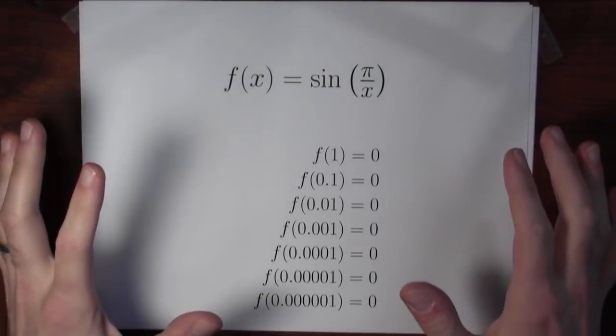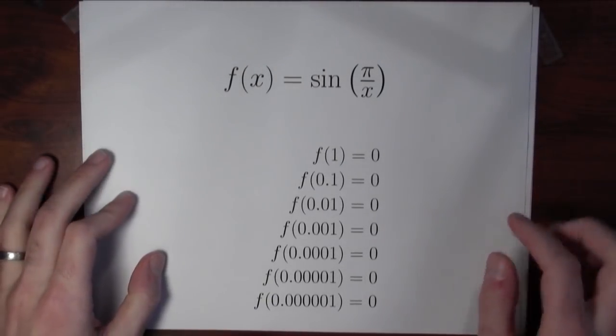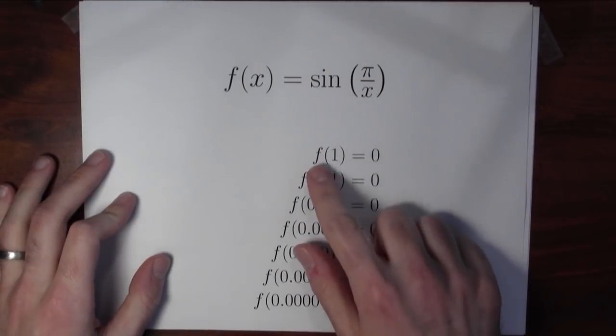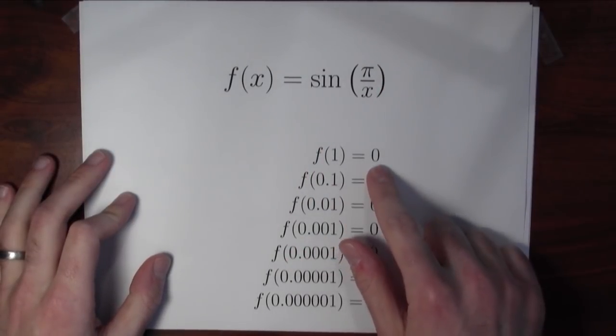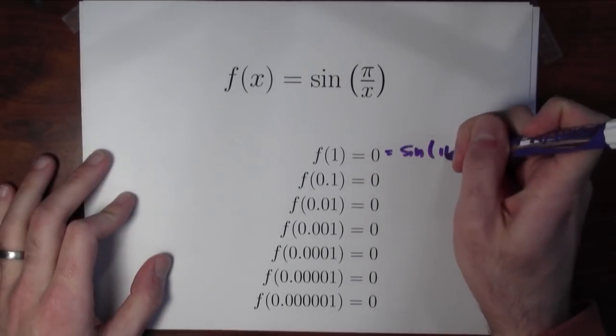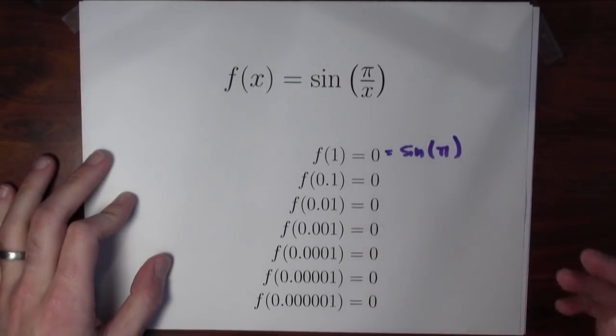Let's see another example along these same lines. Here's a particularly confusing example. Consider the function f(x) equals sine pi over x. This function evaluated at 1 is 0, and that's pretty clear because that is sine of pi. And sine of pi is 0.